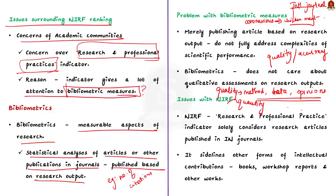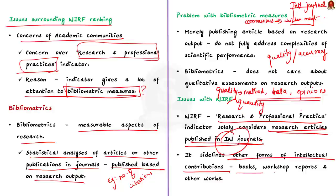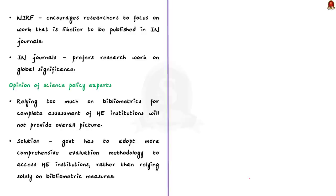Coming back to the NIRF, the research and professional practice indicator of NIRF gives a lot of attention to bibliometric measures. That is, the particular indicator solely considers research articles published in international journals. And it sidelines other forms of intellectual contributions such as books, workshops, reports, and other such forms of work. Overall, the NIRF passively encourages researchers to focus on work that is likely to be published in international journals. As we all know, the international journals usually prefer the research work on topics which are of global significance. So, the NIRF passively discourages the work that focuses on national and local issues.